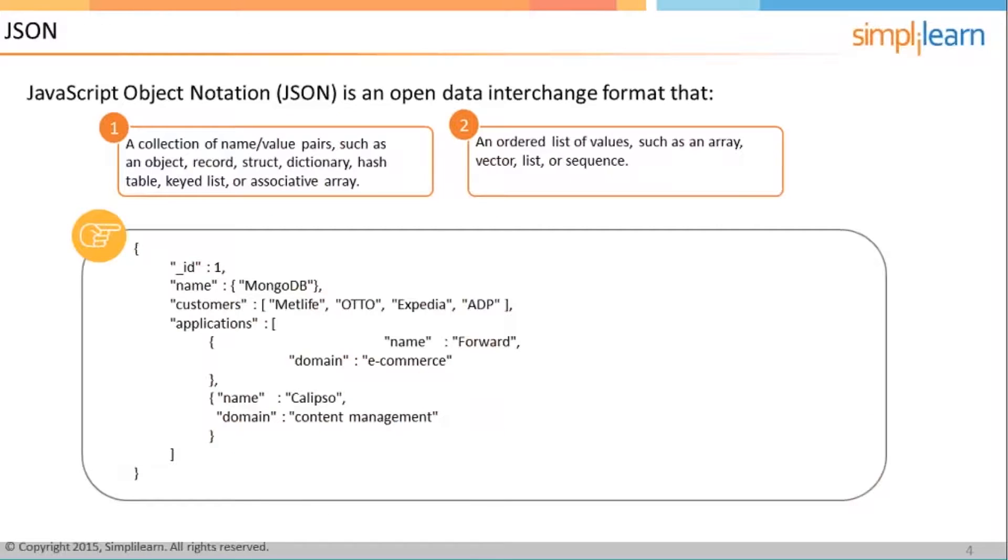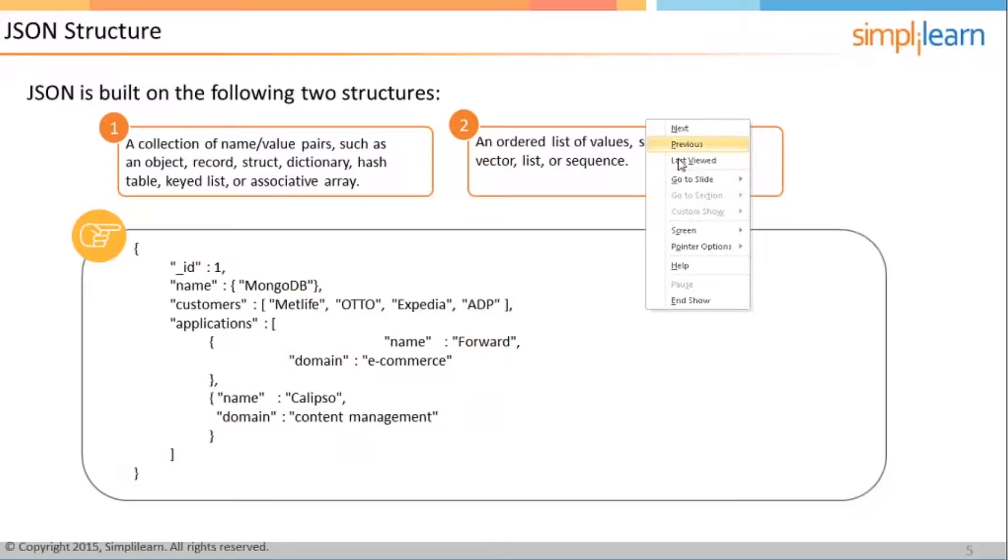Moving to the third slide, it talks about the JSON structure. So JSON is built on the following two structures. First is a collection of name-value pairs.